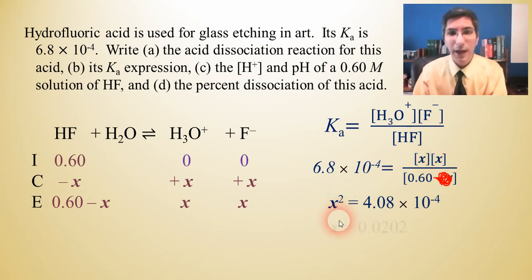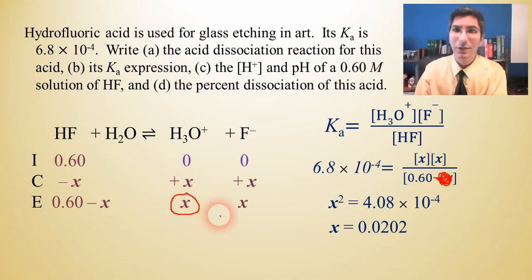When we do that, we get, let's see, 0.60 times that number is about 4.08 times 10 to the negative fourth. And of course, X times X equals X squared. Well, now I can take the square root and find that X is equal to 0.0202. Now going back to our icebox, X is the H+ concentration, isn't it? So that answers part of part C. That's the H+ concentration, 0.0202 moles per liter. Now what's the pH?